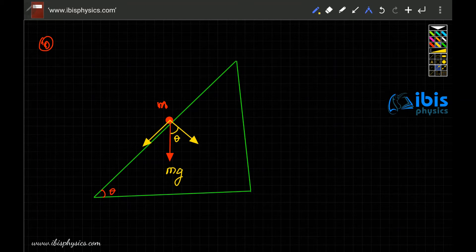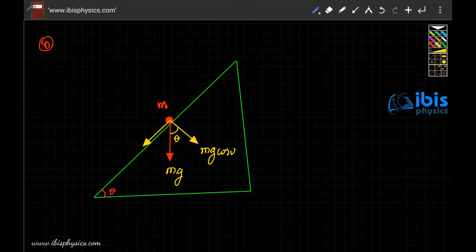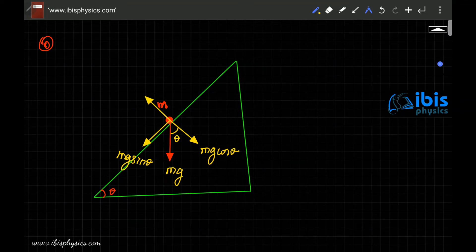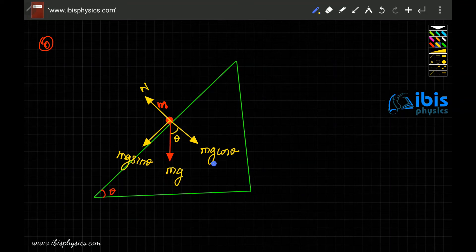Like this mg, you can consider this as we have actually seen this so many times. So I take the privilege of writing it directly. This is mg cos theta. Then the downward force is mg sin theta. Then the normal reaction in this case is equal to mg cos theta.